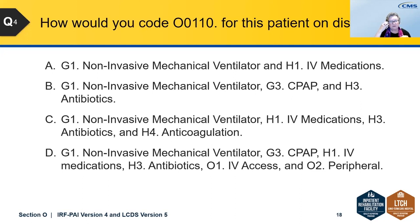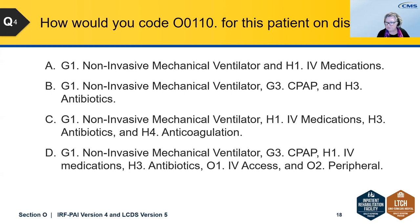How would you code O0110 for this patient on discharge? Is it A: G1 non-invasive mechanical ventilator and H1 IV medications? Or B: G1, G3 CPAP, and H3 antibiotics? Or C: G1, H1 IV meds, H3 antibiotics, and H4 anticoagulant? Or D: G1, G3 CPAP, H1 IV medications, H3 antibiotics, O1 IV access, and O2 peripheral? Please take a few seconds to answer that poll.